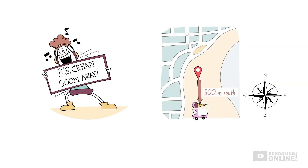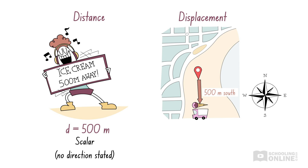Let's spend a moment discussing how distance and displacement are represented in physics. In equations, distance is usually written as lowercase d. Since it's a scalar, we only need to show its magnitude and units. Meanwhile, displacement is usually denoted by a lowercase s with an arrow on top. You'll also see this on the HSC Physics formulae sheet. The arrow is a subtle reminder that displacement is a vector.